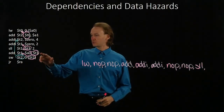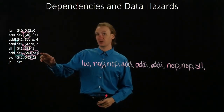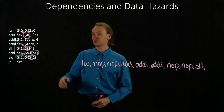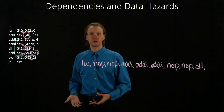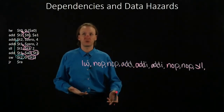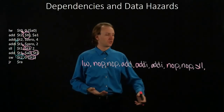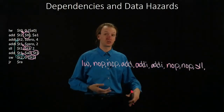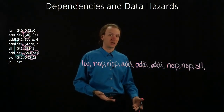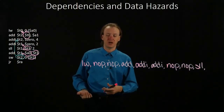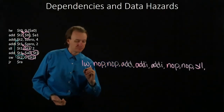Next, we have the add instruction, which is dependent on the results of the shift-left logical. So again, we're going to wait two cycles for shift-left logical to store its results back into a register before we pull them out and use them in the add instruction.